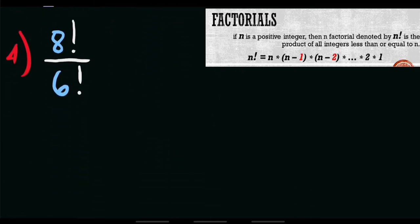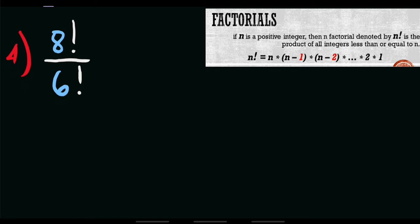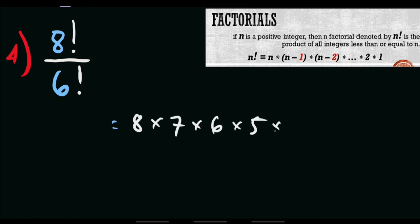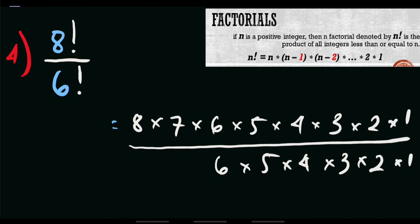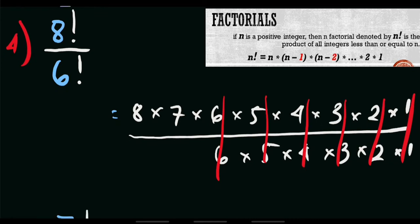For example number 4, let's divide numbers with factorial. We have 8 factorial divided by 6 factorial. Rewriting: 8 factorial is 8 times 7 times 6 times 5 times 4 times 3 times 2 times 1, divided by 6 factorial which is 6 times 5 times 4 times 3 times 2 times 1. Since they share common values from 6 down to 1, we cancel those out, leaving 8 times 7, which equals 56. Therefore, 8 factorial divided by 6 factorial equals 56.